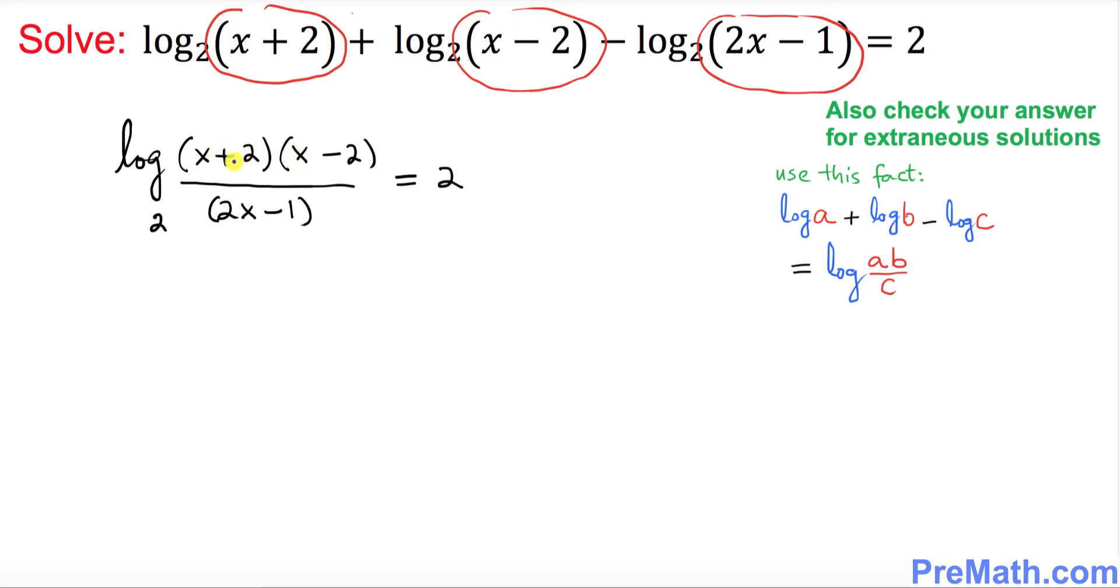Now on the numerator, on the top part, this is A plus B times A minus B. So that will translate into X squared minus 4 divided by 2X minus 1 with the base 2 equals to 2. And if you're wondering how did we get X squared minus 4 on the top, here is the fact I use. You just use FOIL method or distribute and you're going to get X squared minus 4.